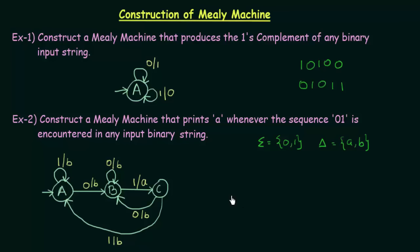Now let us take a few examples and check if this is working. Let us take the string 0, 1, 1, 0. We see that we have the sequence 0, 1 here. Starting from state A: A on getting input 0 goes to B and prints B. Then B on getting input 1 goes to C printing A — at this point it printed A. Then C on getting input 1 goes to A printing B. And A on getting input 0 goes to B printing B. So when we encountered the sequence 0, 1, A was printed — that is what we wanted.